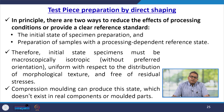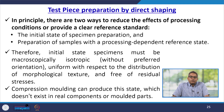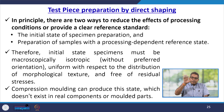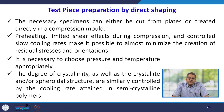In principle, there are two ways to reduce the effect of processing conditions or provide a clear reference standard: one is the initial state of specimen preparation, and the other is preparation of the sample with the processing-dependent reference state. The initial state specimen must be macroscopically isotropic — without preferred orientation — and uniform with respect to the distribution of morphological texture and free of residual stresses. Compression molding can produce this state, which does not exist in a real component or molded part. The necessary specimens can either be cut from plates or created directly in a compression mold.